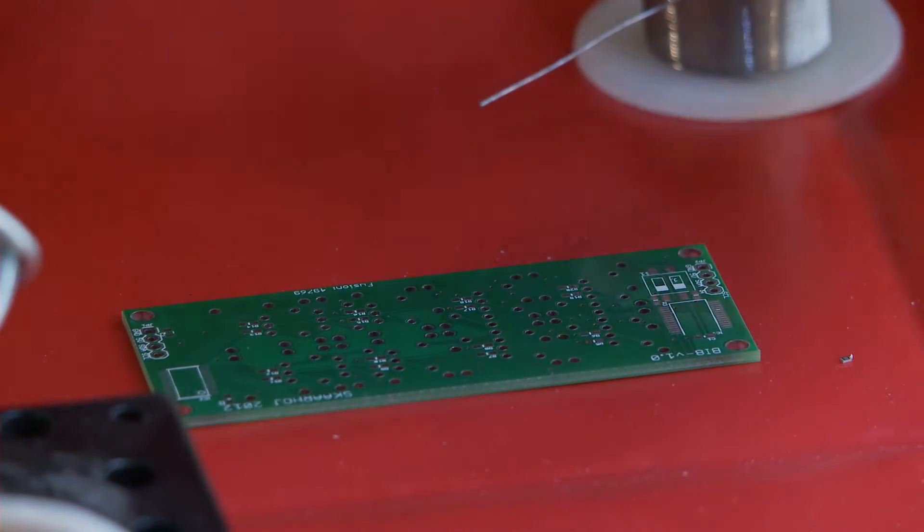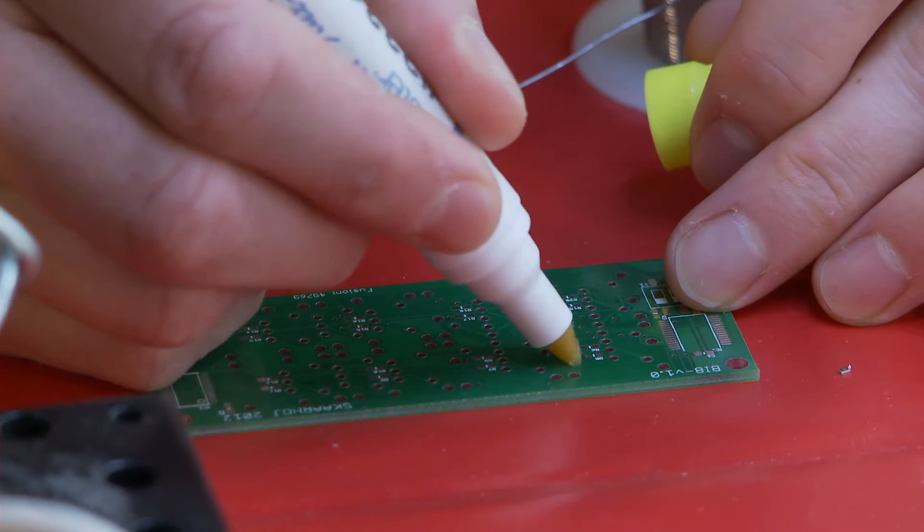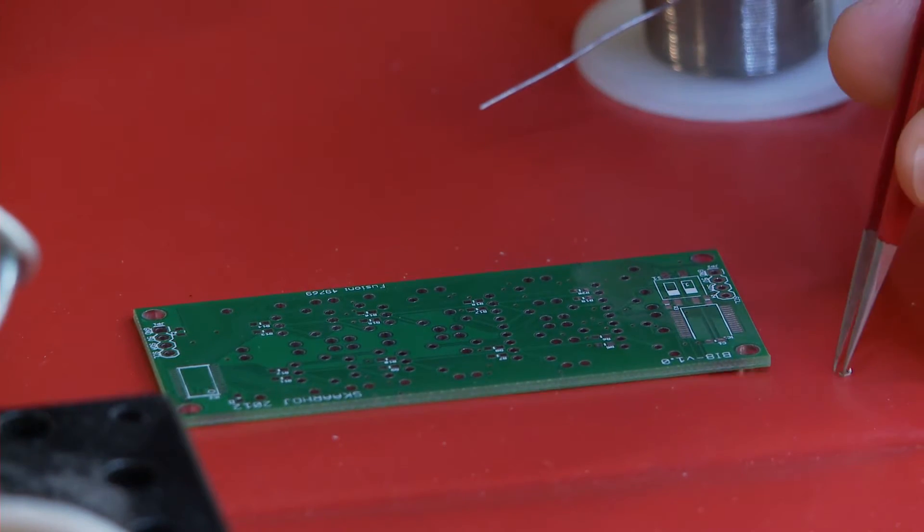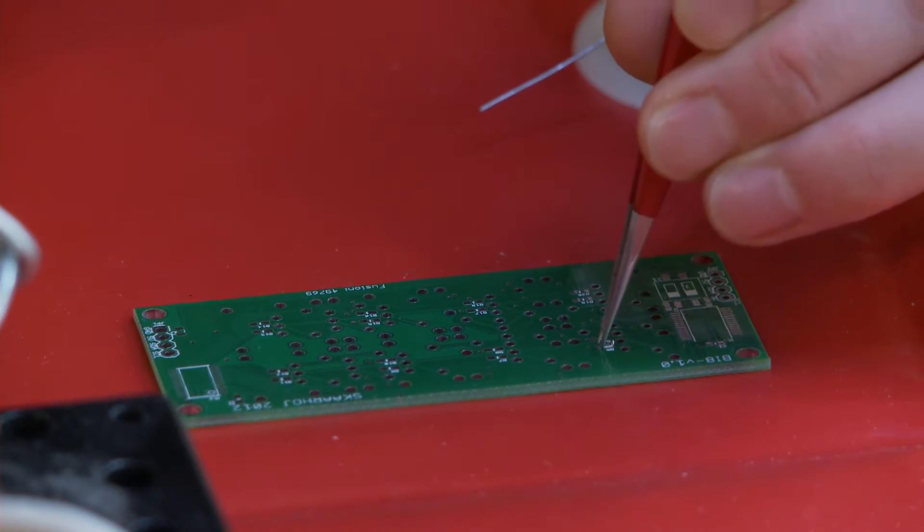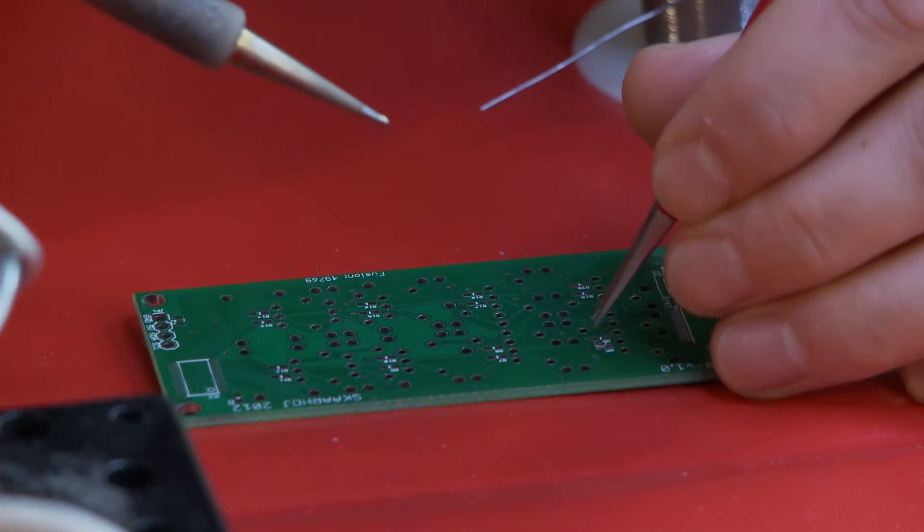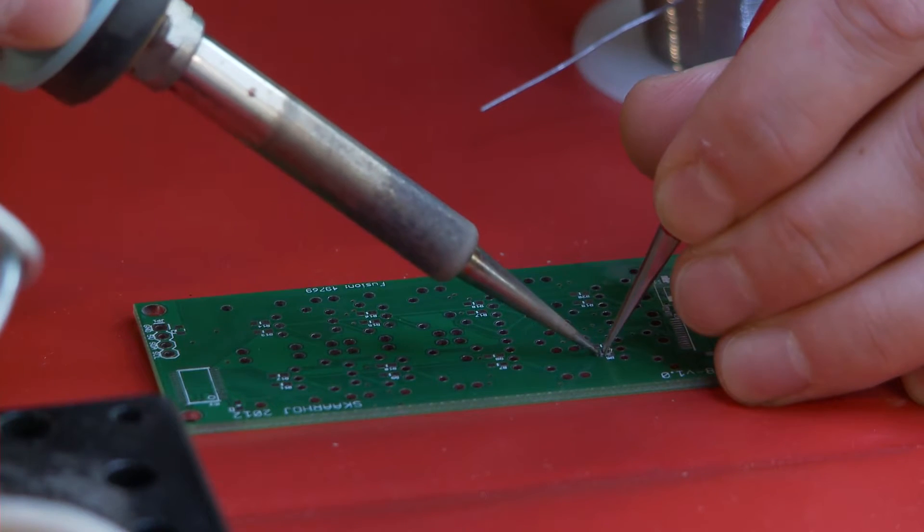First I take some flux and put it in the place where I put the first resistor. I take the resistor, put it in place and then simply solder it.